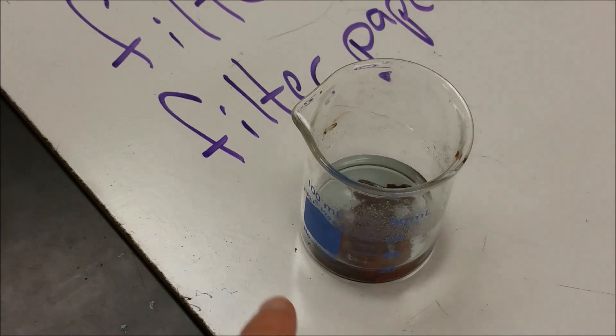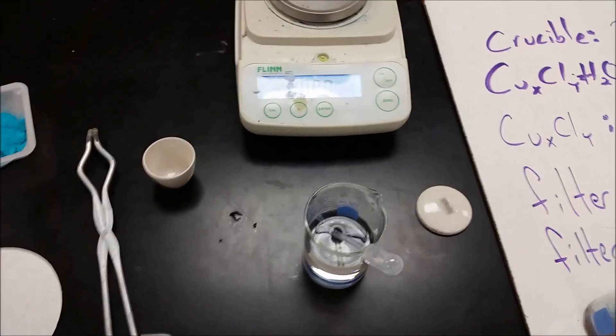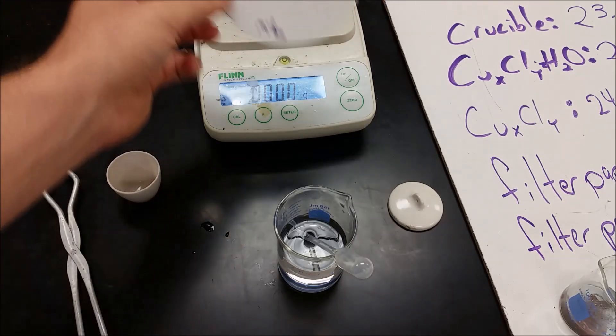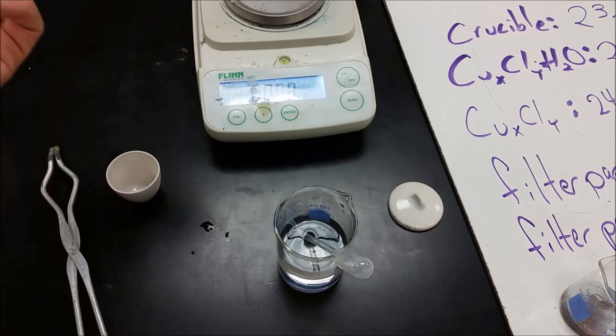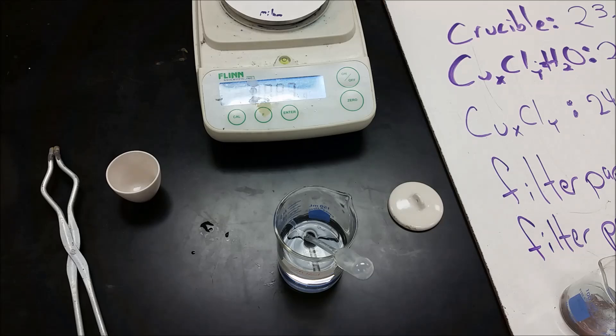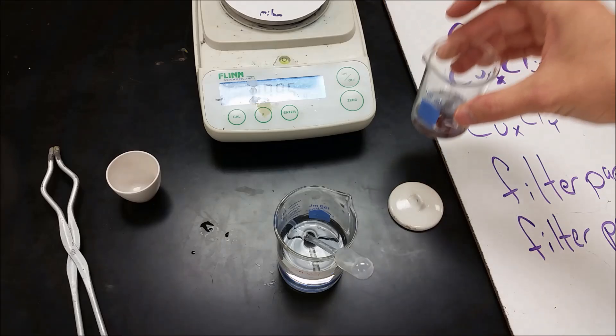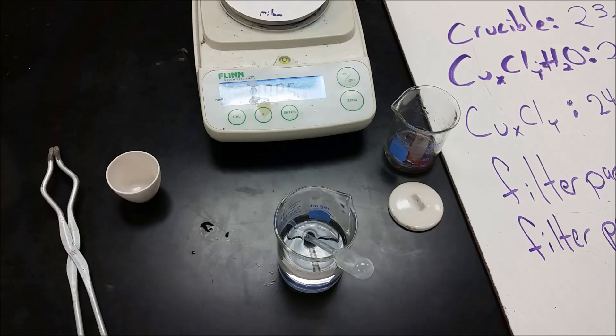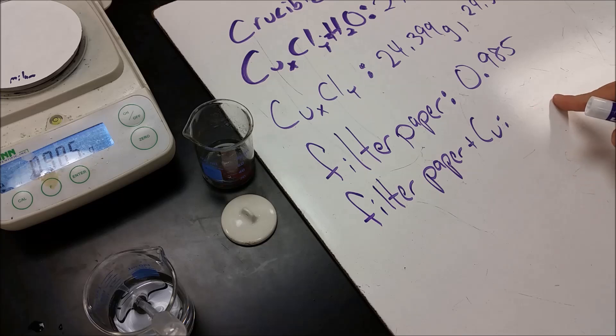We're now getting to the point where the blue color is starting to go away. Not quite there yet, but in the meantime we're going to get ready. So what we're going to do is we're going to zoom back out. And we are going to get our filtration set up ready. So our filter paper, we're going to get the mass of that, and it is 0.985, and what we're going to do is we're going to filter the copper from the solution, and we're going to see how much copper is left. When we're done, we're going to fill in what the filter paper plus the copper is after it's been rinsed and dried overnight.